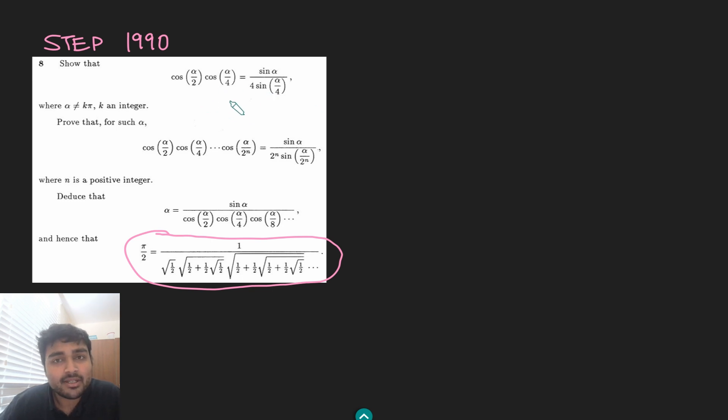Show that cosine of alpha over 2 times cosine of alpha over 4 equals sine of alpha over 4 sine alpha over 4. This is pretty straightforward to do. In fact, I'm going to first multiply by 4 sine alpha over 4.